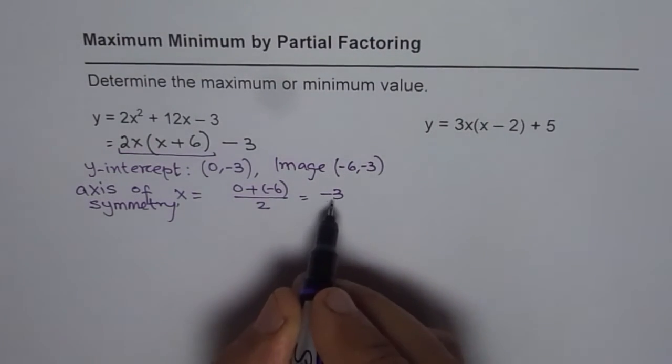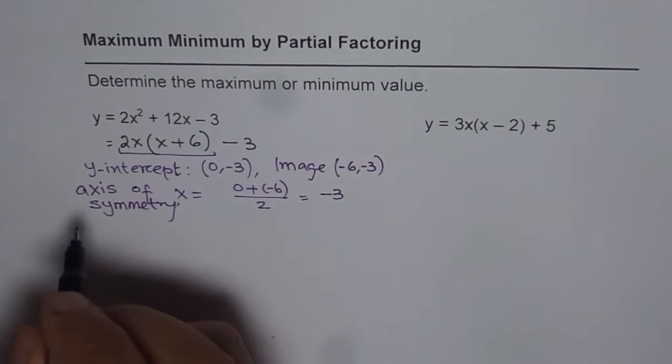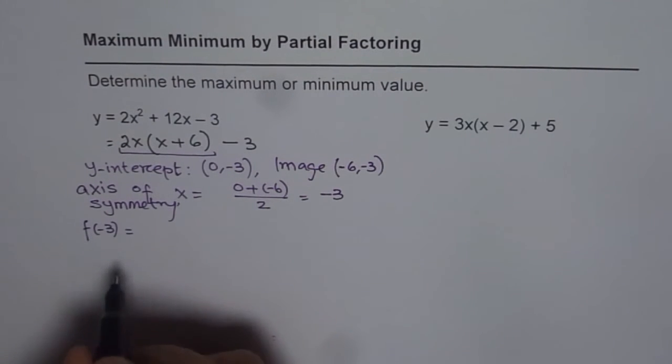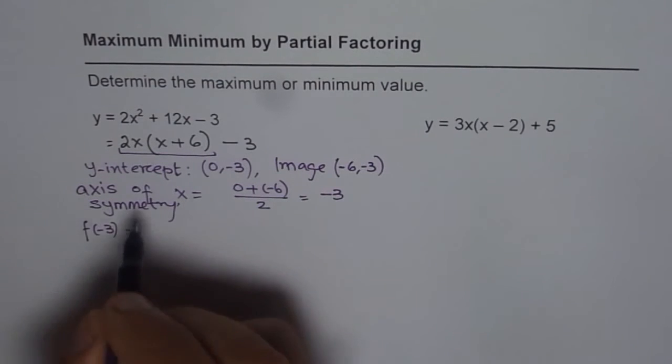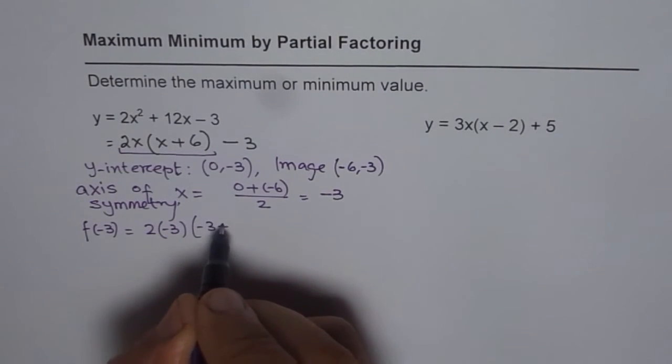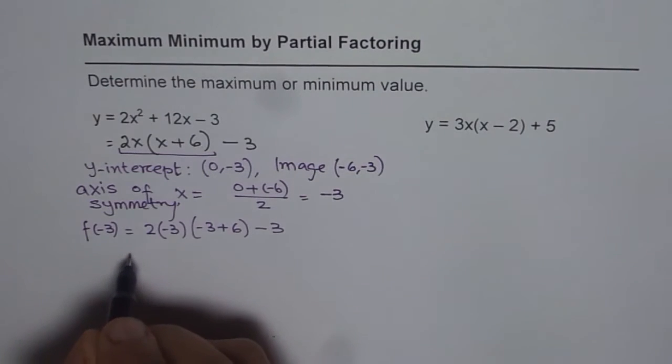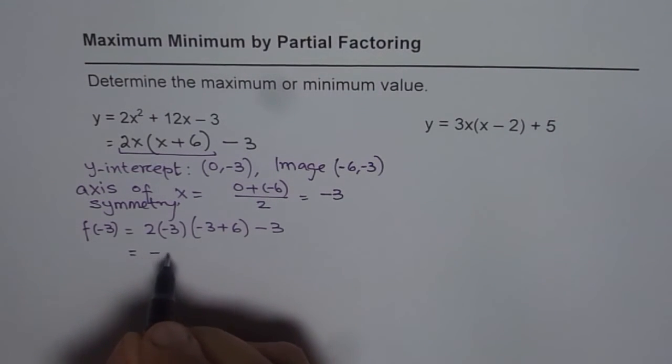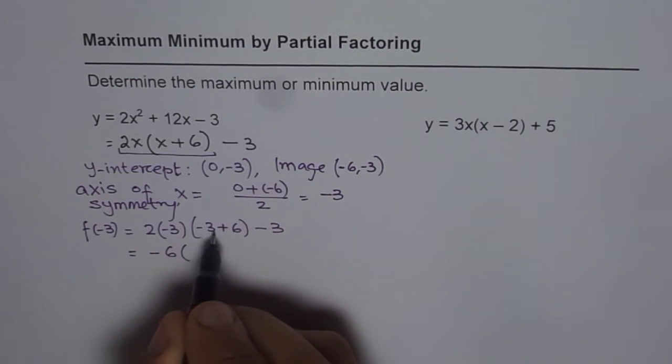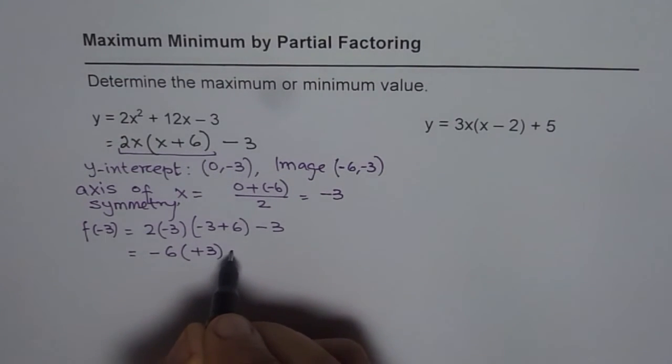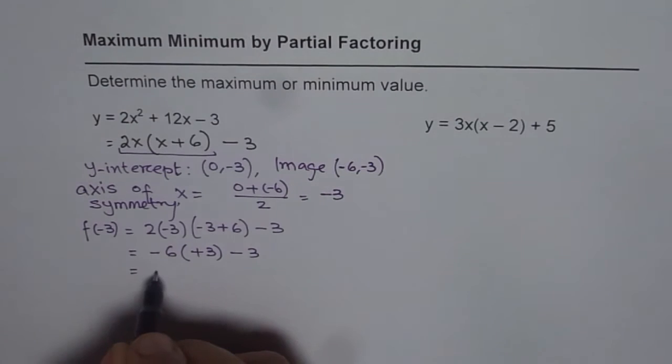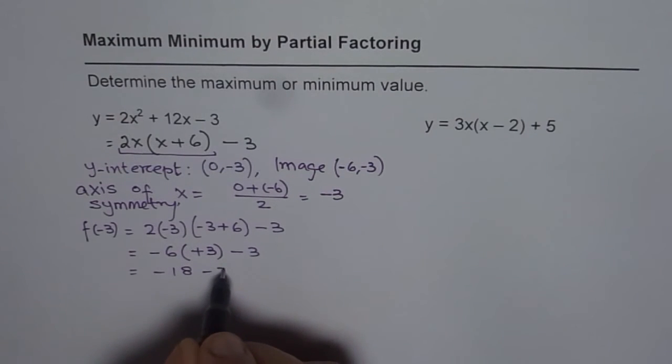Since vertex is on axis of symmetry, if I substitute minus 3 here and find the value of this function at minus 3, I will get the maximum or minimum point. So, that will be 2 times minus 3 times minus 3 plus 6 minus 3. So, the value is 2 times minus 3 is minus 6, minus 3 plus 6 is plus 3 minus 3. That gives us minus 18 minus 3 and that is minus 21.